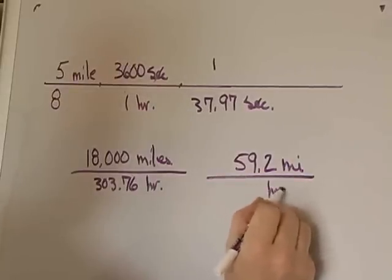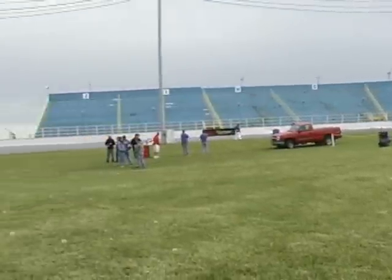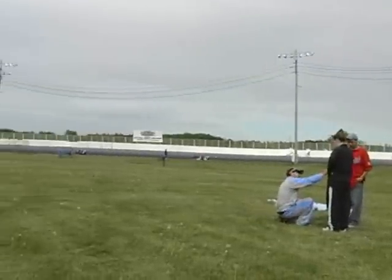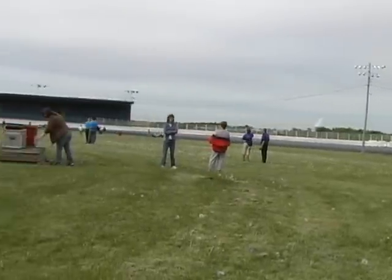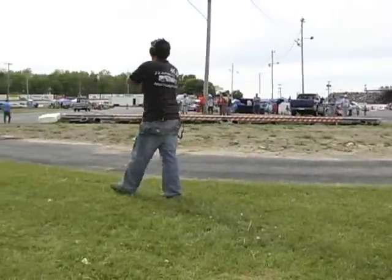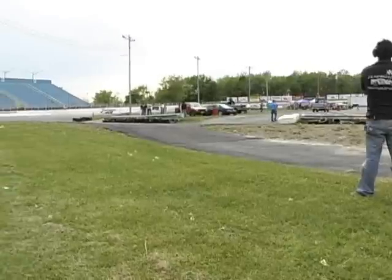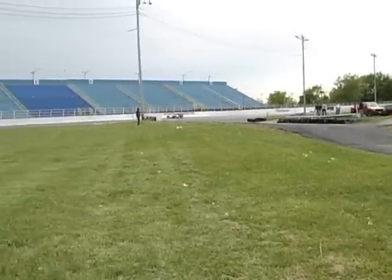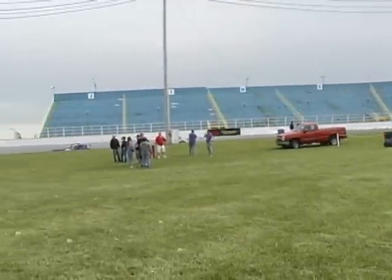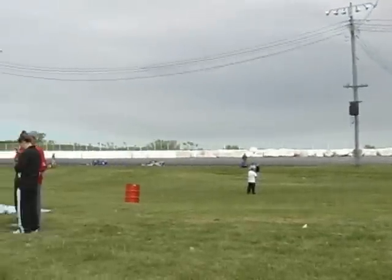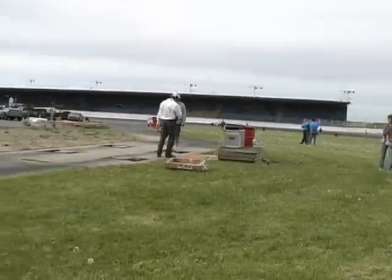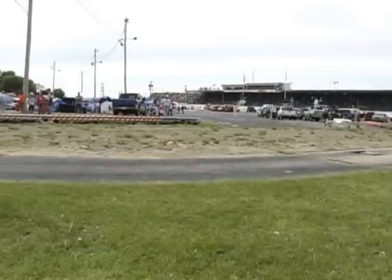Now let's do one with a complete lap at full speed. Here they go — here's Mr. Joya, number nine, moving right along. I've moved to a different position on the track to get a better view. Here he is coming back around — we stopped the time and came up with 17 seconds again. We've already done that math — 132 miles per hour.